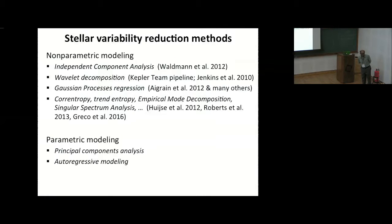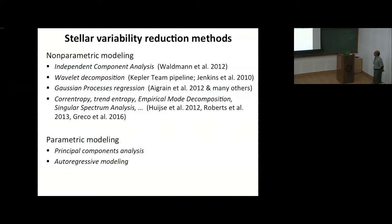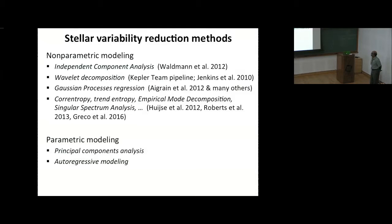Some of the statistical techniques useful here include: independent component analysis, used by Waldmann in 2012; wavelet decomposition used by the Kepler team pipeline (Jenkins at NASA Ames); Gaussian process regression by Suzanne Aigrain and colleagues; and trend filtering and empirical modeling by Roberts et al. Other possibilities include principal component analysis, autoregressive modeling, various types of ARMA and moving average modeling. Periodic search methods include fast Fourier transform for stationary, evenly-spaced Gaussian data, and the Lomb-Scargle periodogram.